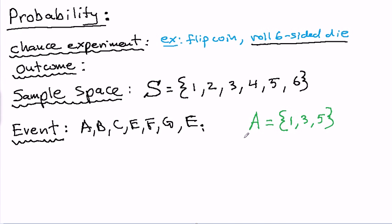Likewise, if I rolled a 1, I could say event A had occurred. If I roll a 5, I could say event A has occurred. But if I roll a 2 or a 4 or a 6, I can't say event A has occurred. I can say event A has not occurred, though.